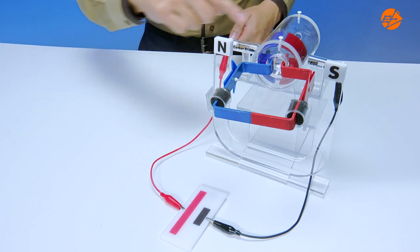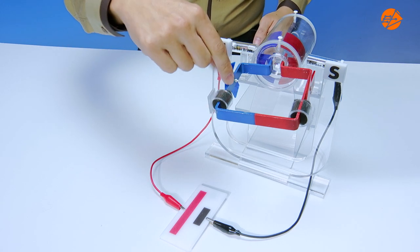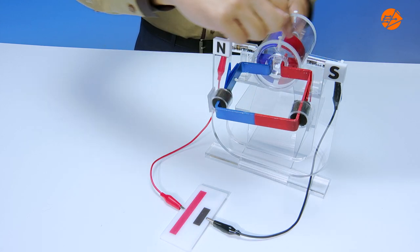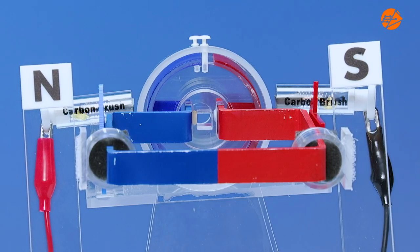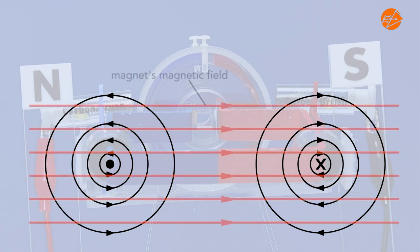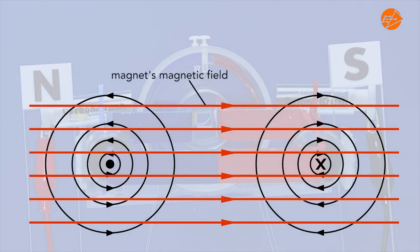Here, a DC motor is connected to a battery. This is the direction of the conventional current and magnetic fields are generated around the coil. The magnetic field from the permanent magnet interacts with these fields from the current carrying coils. Let's deduce the direction of the resultant magnetic force.